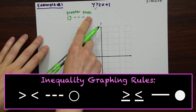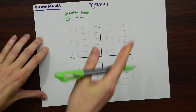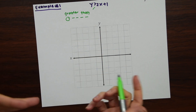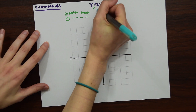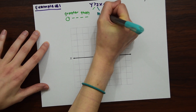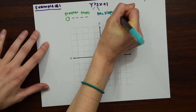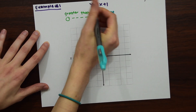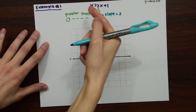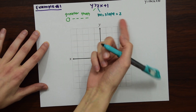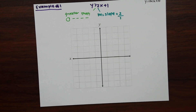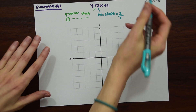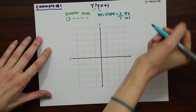We use an open circle and dotted line because whatever falls exactly on this line will not be included in the solution. Next we identify the slope: m equals 2, which we put over 1 as a fraction, meaning we go up 2 and to the right 1.